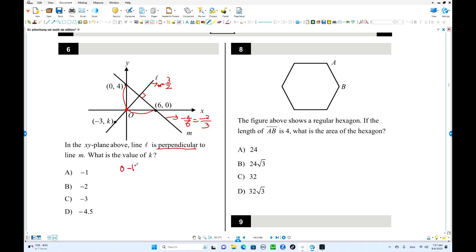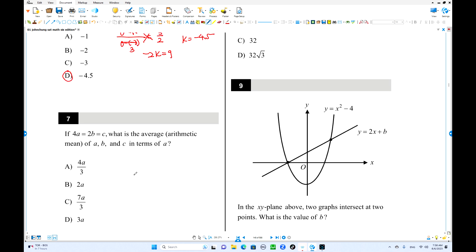They pass through the origin. So 0 minus k over 0 minus minus 3 equals to 3 over 2. This is 3. So you can cross multiplication. Negative 2k equals 9. And k equals negative 4.5. D is the answer. Still easy. Right?